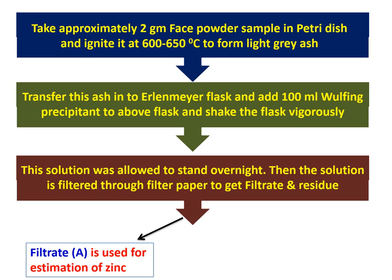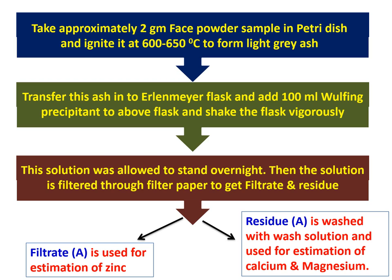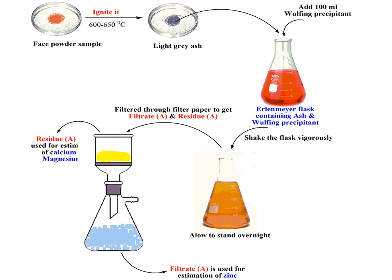The solution is then filtered through filter paper to get a filtrate and a residue. The filtrate, known as Filtrate A, is used for estimation of zinc in base powder. The residue, known as Residue A, is washed with wash solution and used for estimation of calcium and magnesium.